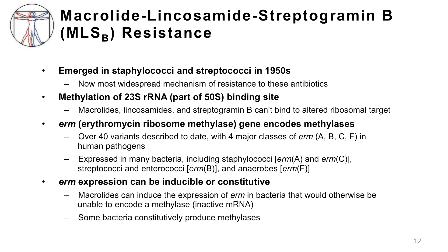The methylase enzymes that methylate the binding site are encoded by ERM genes, over 40 of which have been described to date. This gene can be induced or constitutively expressed by bacteria. Unfortunately, this type of resistance has led to major treatment limitations. For example, macrolides were once reliable treatment options for pneumonia caused by Streptococcus pneumoniae, the most common cause of community-acquired pneumonia. However, now nearly 40 to 50 percent of pneumococci in the U.S. are currently macrolide resistant, limiting the use of macrolides in this very common and important infection.